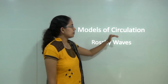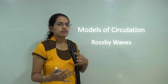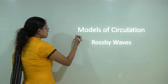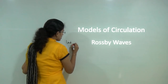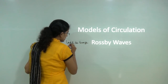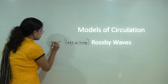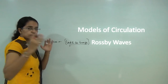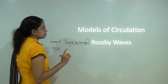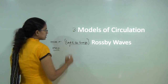When we talk about models of circulation, we must be clear about the patterns of air circulation, which we have already discussed in previous lectures. Starting from the very fundamental, these models are a modification of land and sea breeze. We understand land and sea breeze at a micro level; however, when we try to understand the same phenomena at a macro level, we discuss the 3 major models of circulation.